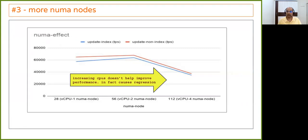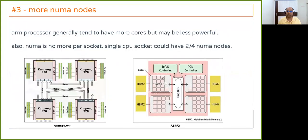These are what we call NUMA scalability issues. A quick note: the traditional assumption that one socket equals one NUMA node is no longer true. With Kunpeng, one socket can have two NUMA nodes. With another processor from Phytium, one socket can have four NUMA nodes. So you need to think about how many NUMA nodes a particular setup has.